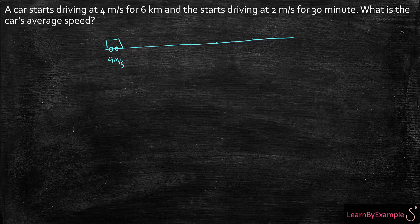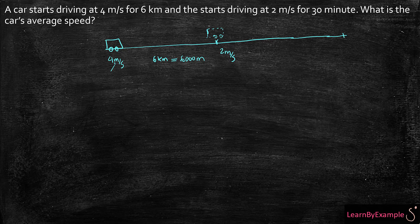My car is driving at 4 meters per second and it's traveling for 6 kilometers. So from here to here, my distance is 6 kilometers — or since I have my velocity in meters per second, the easiest way is to write this in meters: 6,000 meters. Then 6,000 meters later, I decide to start driving at 2 meters per second, and I'm going to continue going at that speed for 30 minutes.